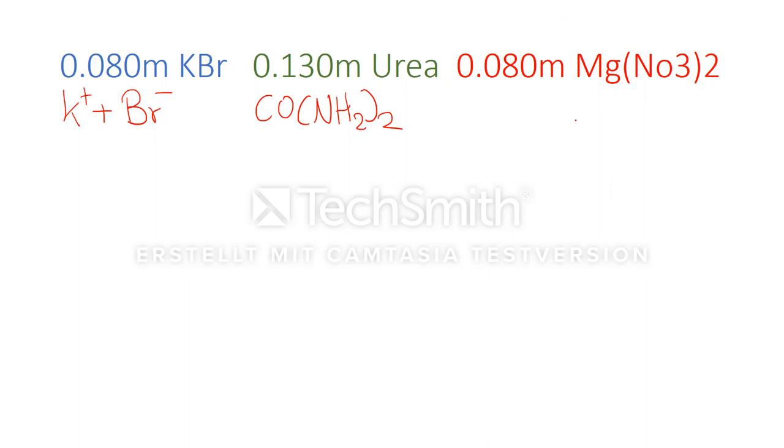Let's have a look at magnesium nitrate. Magnesium nitrate will actually dissociate into three moles, into magnesium ions and two nitrate ions. We have one, two.